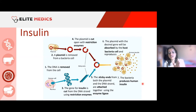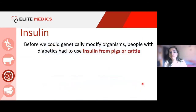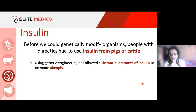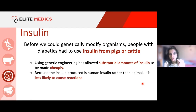This was a very significant scientific development. Before we could genetically modify organisms, people with diabetes had to use insulin from pigs or cattle. Using genetic engineering, a substantial amount of insulin can now be made very quickly and very cheaply — it's much cheaper to breed bacteria than to breed pigs and cattle.